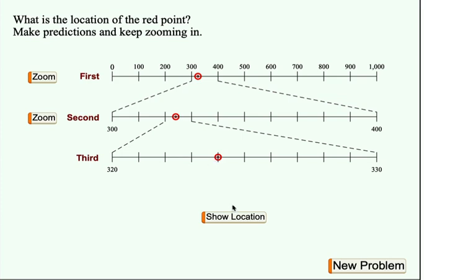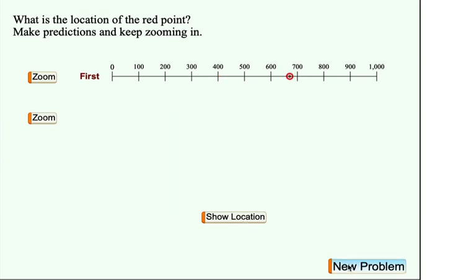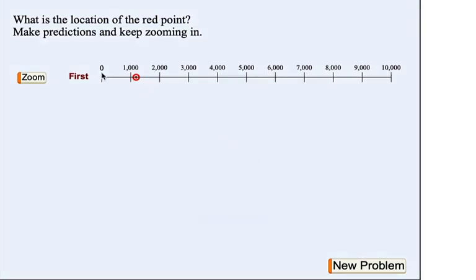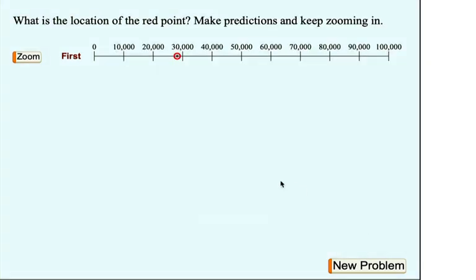And again, I can press new problem. And each time I'll need to zoom in twice when making my prediction. This pattern continues on subsequent pages. Here, each of these tick intervals is a thousand. So we're going to be zooming in not once, not twice, but three times to pinpoint the exact location. And when we're really good, we're going to play this game where each of these tick intervals is 10,000. So we'll be zooming in even more and getting lots of practice about thinking about place value.